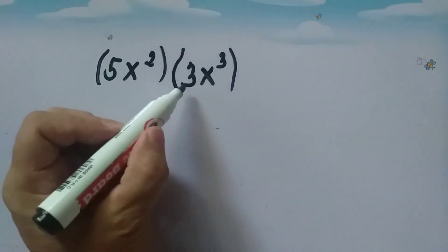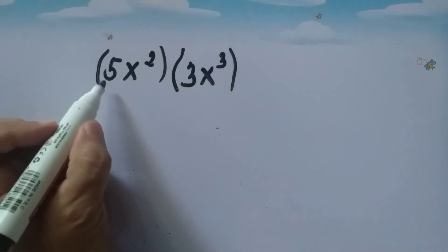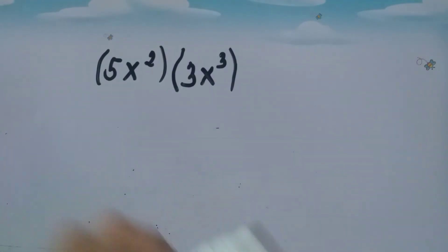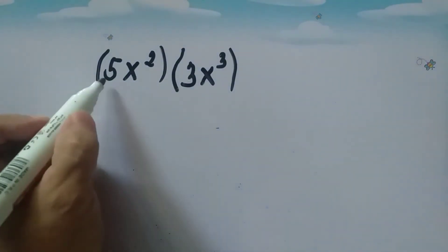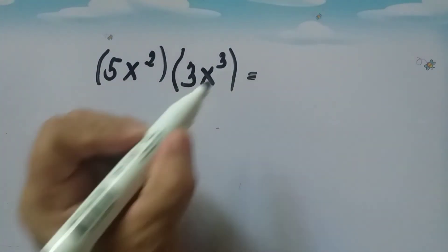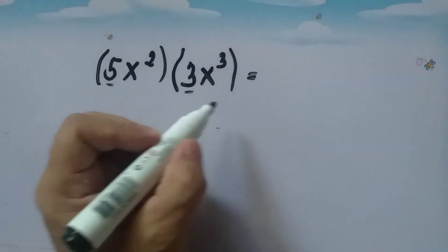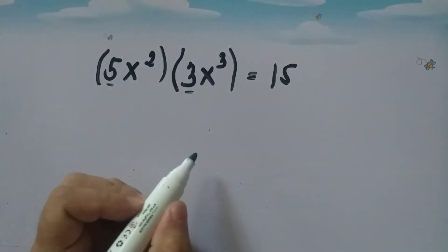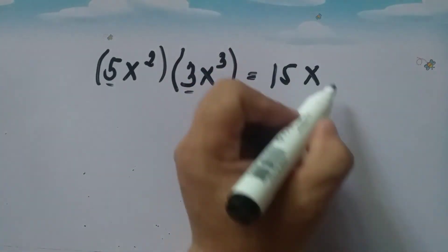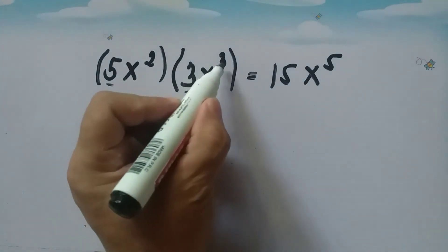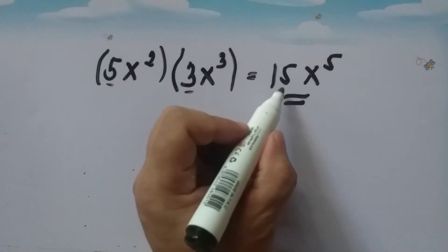Another given: 5x squared times 3x cubed. Here we have 5 and 3 as our numerical coefficients. We first get the product of 5 and 3, which is 15. Then x squared times x cubed gives x to the fifth because we add the exponents: 2 plus 3 is 5. So our product is 15x to the fifth.